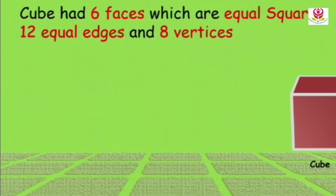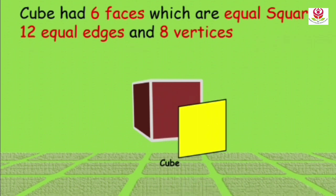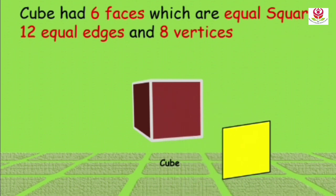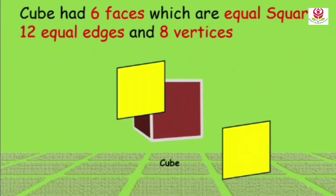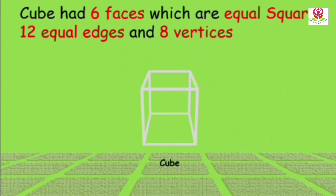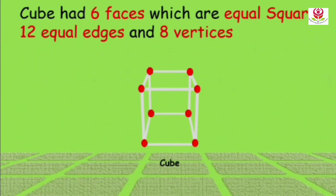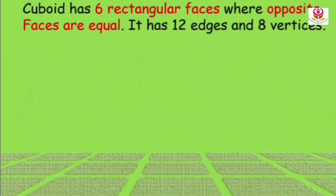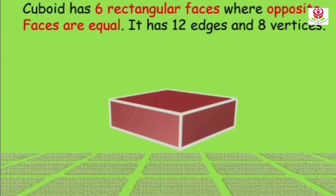Let us see about the cube. Cube has 6 faces which are equal squares. It has 12 equal edges or sides — 1, 2, 3, 4, 5, 6, 7, 8, 9, 10, 11, and 12. So cube has 12 equal edges and 8 vertices or 8 corners.